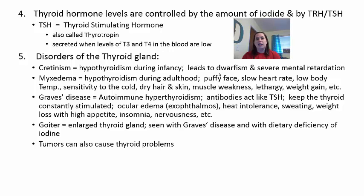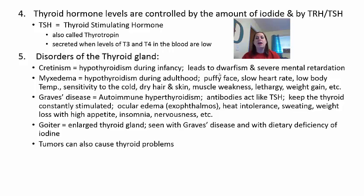Cretinism is hypothyroidism (low T3 and T4) during infancy — it can lead to forms of dwarfism and severe intellectual disability because thyroid hormones support nervous system reactivity. Myxedema is hypothyroidism in adults, causing symptoms including a puffy face, slower heart rate, lower body temperature, sensitivity to cold, dry hair and skin, muscle weakness, lethargy, and weight gain due to decreased metabolism. Graves' disease is autoimmune hyperthyroidism — the immune system attacks the thyroid, acting like thyroid-stimulating hormone, causing the thyroid to overproduce T3 and T4.